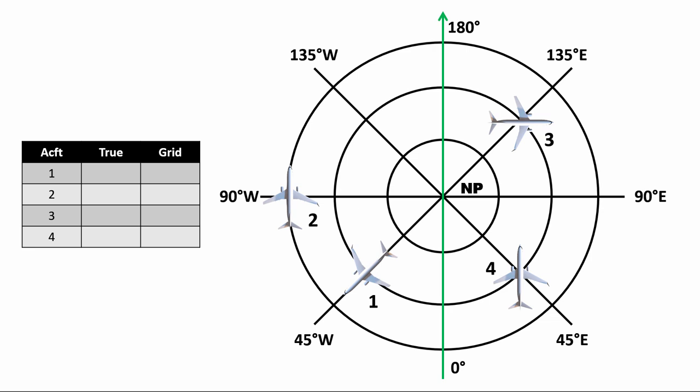Now that we know how to draw the diagram, let's look at how to use it, using a north polar stereographic chart with the prime meridian as the reference. For the first aircraft, true north points toward the north pole, so the true heading — the angle between true north and the nose of the aircraft — is 180 degrees. Drawing a parallel line from the reference meridian, the grid heading — the angle between grid north and the nose — is 225 degrees. For the second aircraft, true heading is 270 degrees and grid heading is 360 degrees.